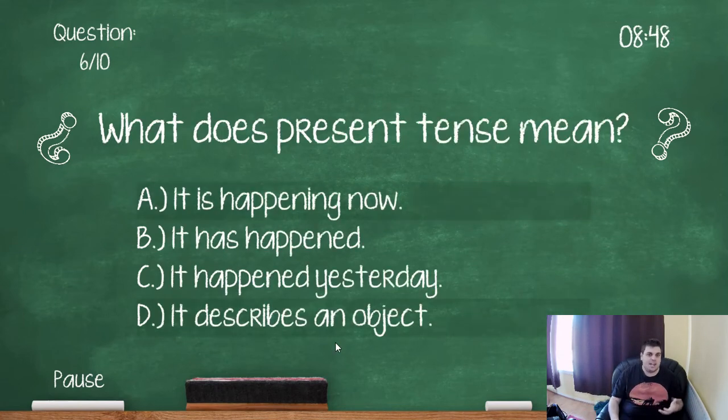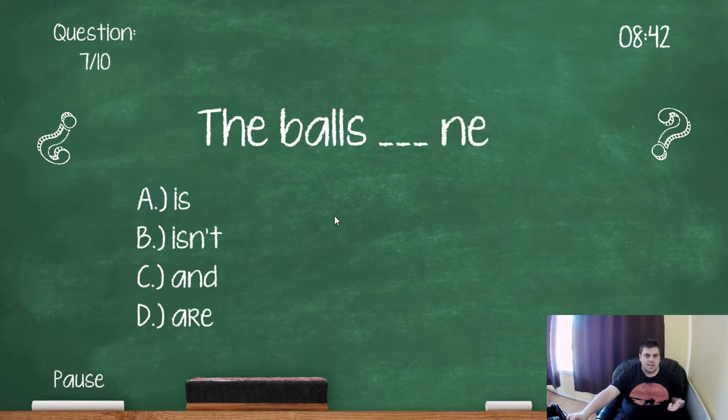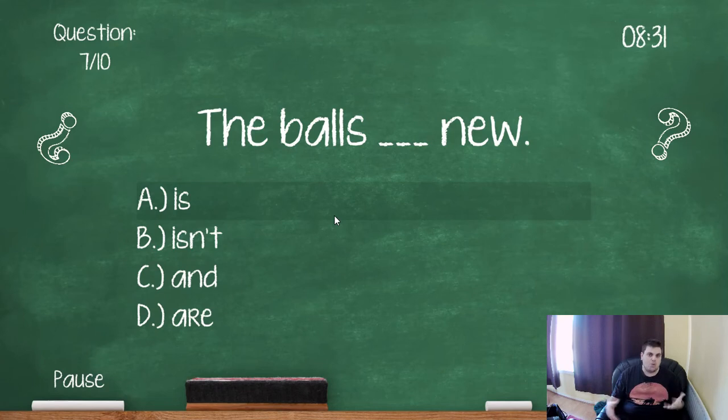What does present tense mean? So present tense means it's happening now. The balls, something new. The balls is new. Doesn't make sense because it's plural. The balls isn't new. Doesn't make sense. So balls and new. Doesn't make sense. So it has to be balls are new because you're talking about more than one. So D.